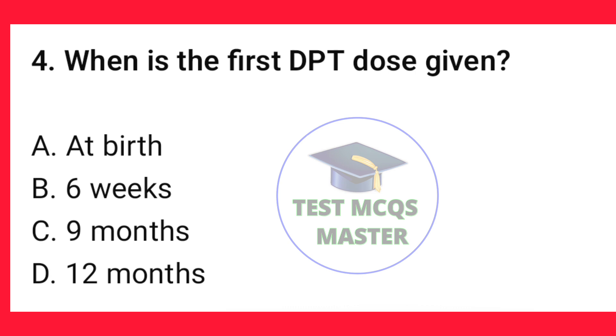Question number 4. When is the first DPT dose given? The correct option is B — six weeks.